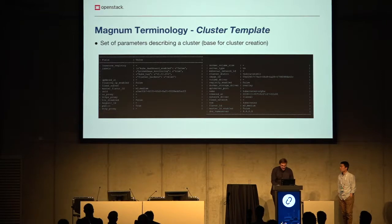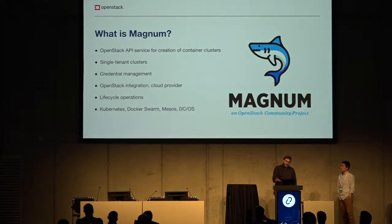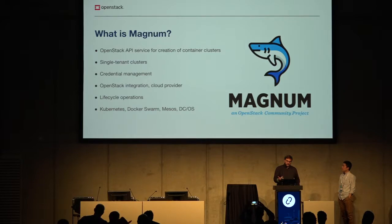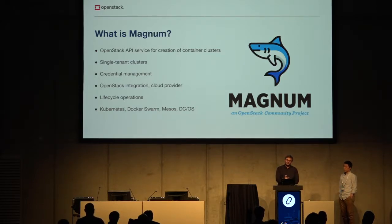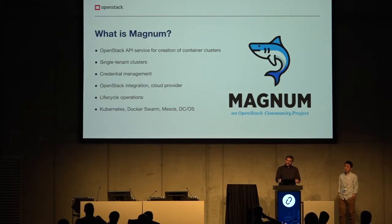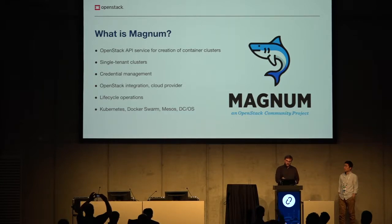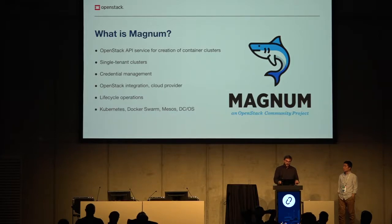A key term in Magnum is COE — Container Orchestration Engine — which is also the identifier noun in the OpenStack client. If you use the OpenStack common client to talk to Magnum, you must specify COE. COE stands for Container Orchestration Engine, and in Magnum that means Kubernetes, Docker Swarm, Mesos, or DCOS.